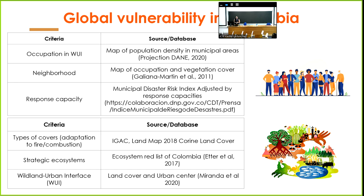These are the six criteria we used. The first is occupation in the WUI — the wildland-urban interface. The second is the neighboring land cover type based on combustion capacity. The third is response capacity, using the national disaster risk index.